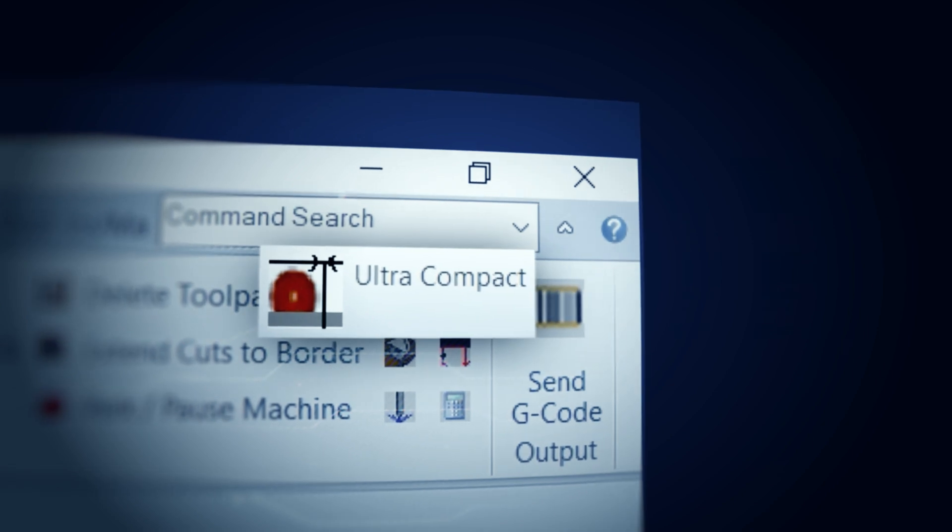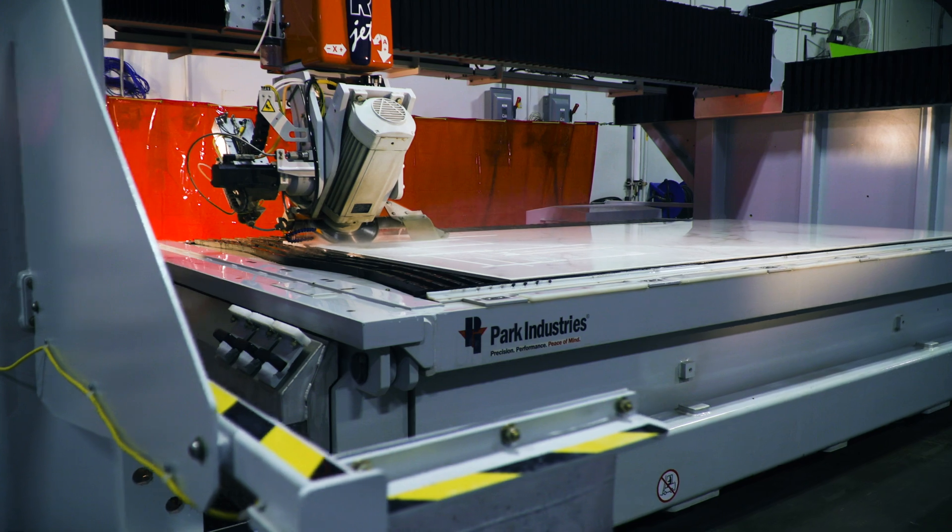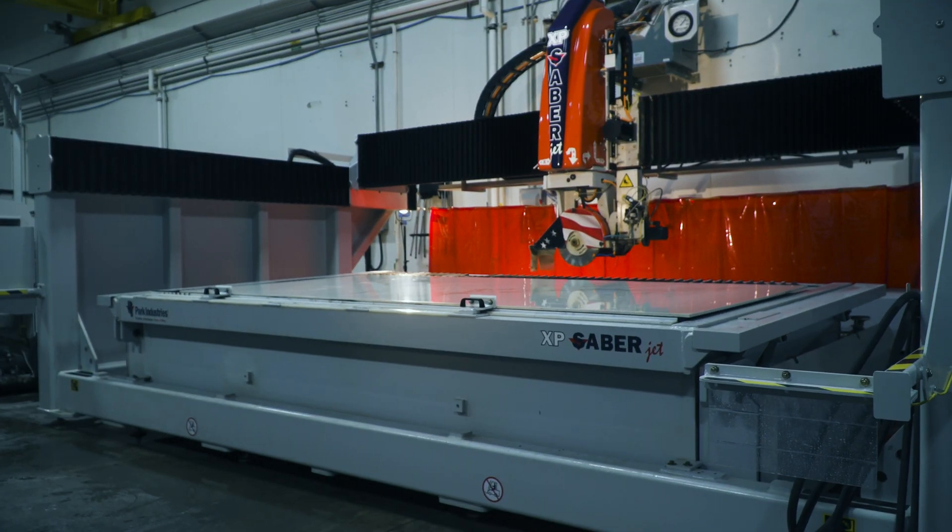The Ultra Compact Automation button will automatically tell your saw to ramp in and out of cuts at optimal speeds for delicate materials like porcelain.